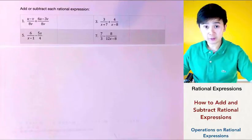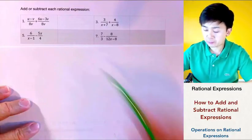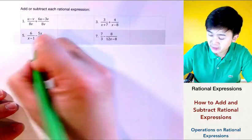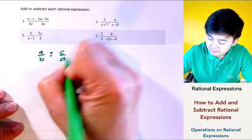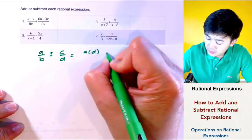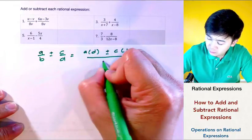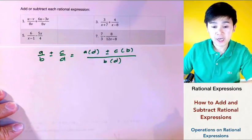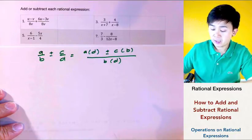Today we're going to be adding and subtracting rational expressions. For fractions with different denominators, we follow this formula: if we have A over B plus or minus C over D, it will be A times D plus or minus C times B, all over B times D. This is the formula for adding and subtracting fractions with different denominators.